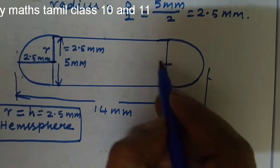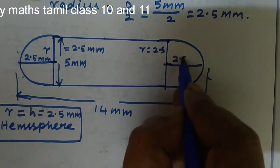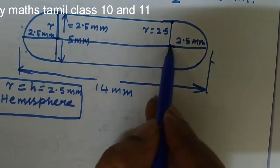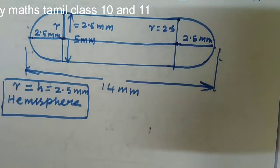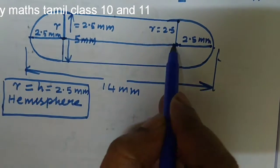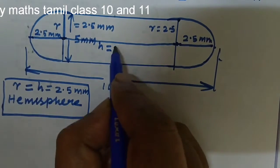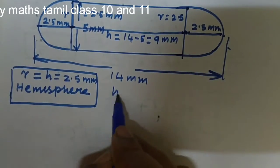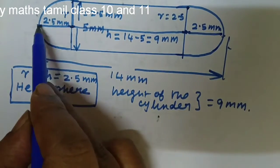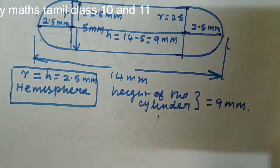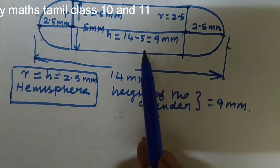Adding the heights of the two hemispheres: 2.5 plus 2.5 is 5 mm. To find the height of the cylinder, total height minus 5: 14 minus 5 is 9 mm. The height of the cylinder is 9 mm.